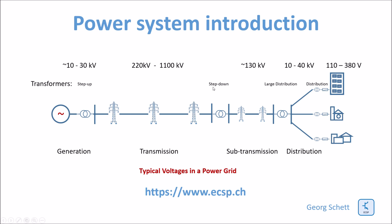Then you have step-down transformers bringing the voltage down to 130 kV, which is a typical sub-transmission network built around larger cities. Then large distribution transformers feed distribution networks at voltage levels between 10 to 40 kV. Finally, smaller distribution transformers feed appliances and homes at the voltage level well known to us: 110 to 380 volts.